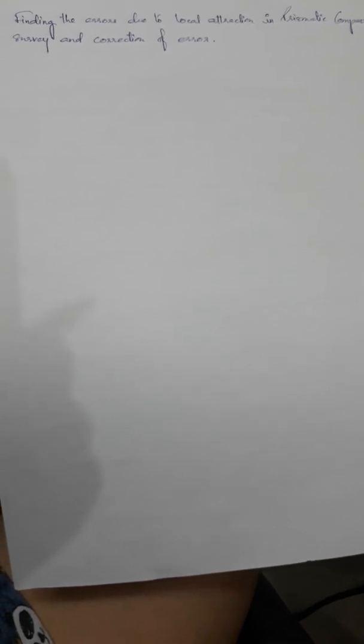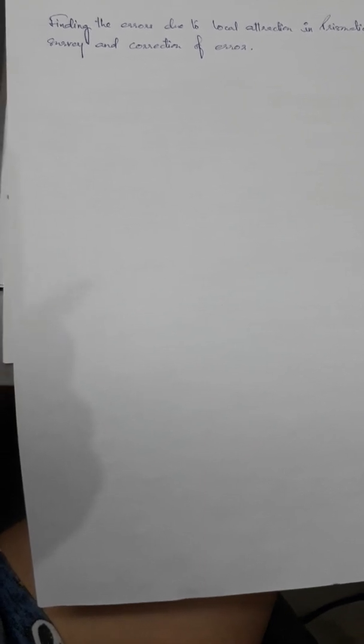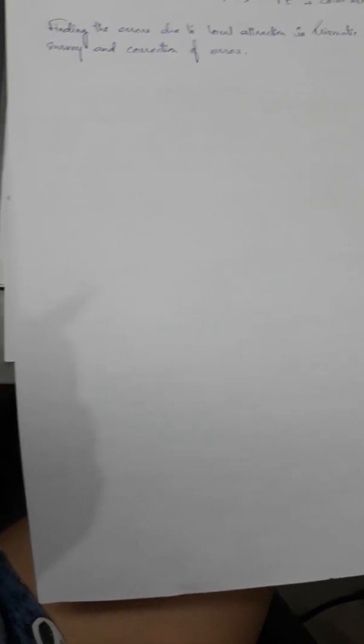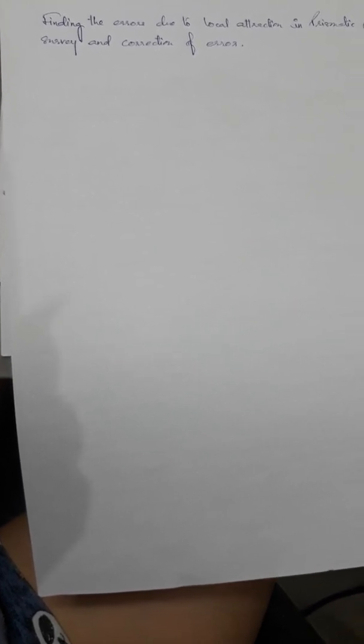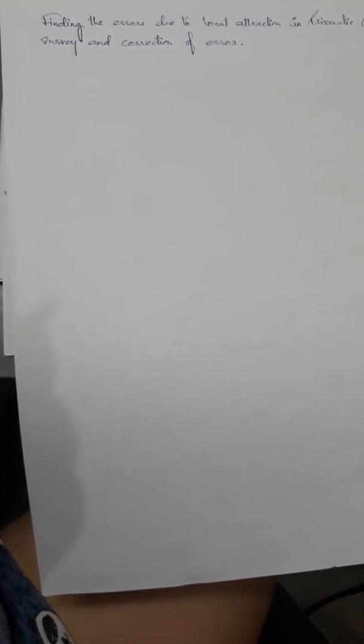Here we will try to find out the error happening due to local attraction. Since it is a compass, it is very much attracted to the magnetic field, so there are often errors during this survey. Before doing this, we need to have some results of the survey — for example, some line values and the values of forward and backward bearings for those lines.